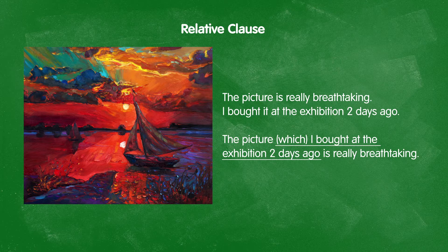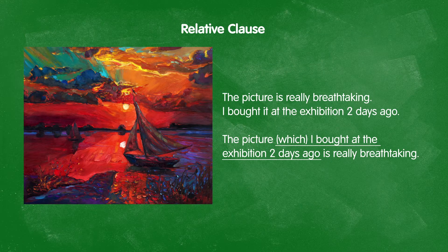Have you noticed that I described the picture in two sentences? Is there a way that I can do it in one? Absolutely. I could also say something like: the picture which I bought at the exhibition two days ago is really breathtaking. Here I've used a relative clause to describe the picture in one sentence. The word 'which' is in brackets on your screen — this can be omitted.